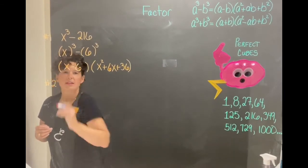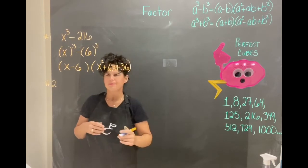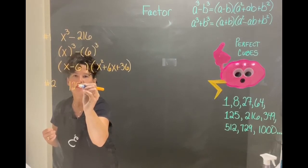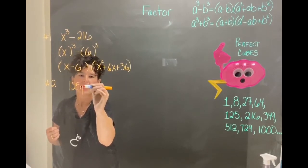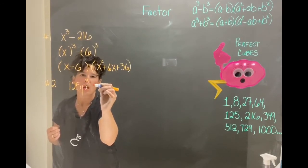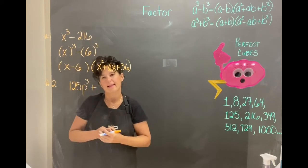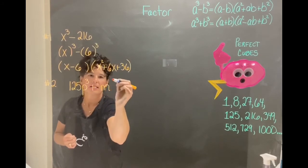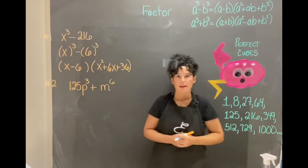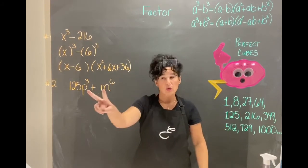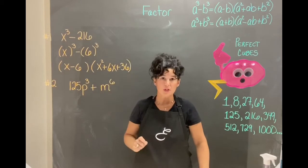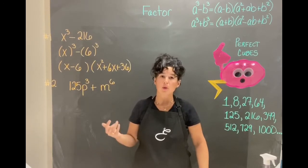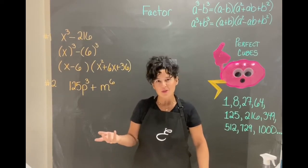We'll go ahead and put in some variables that are a little more complicated. Let's say let's go with 125 p to the third power plus and then let's go with m to the sixth power. All right, so we have two terms. Nothing is in common to both of them so it's got to be a formula. So we either have perfect cubes or perfect squares and of course we're working on cubes so these are going to be perfect cubes.